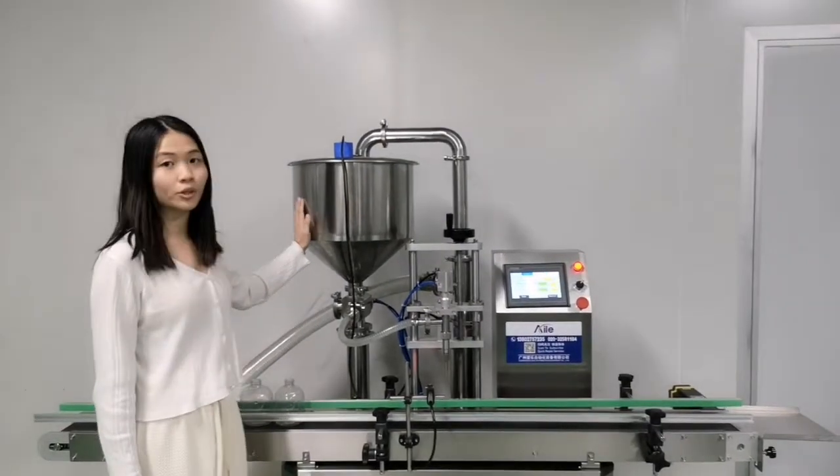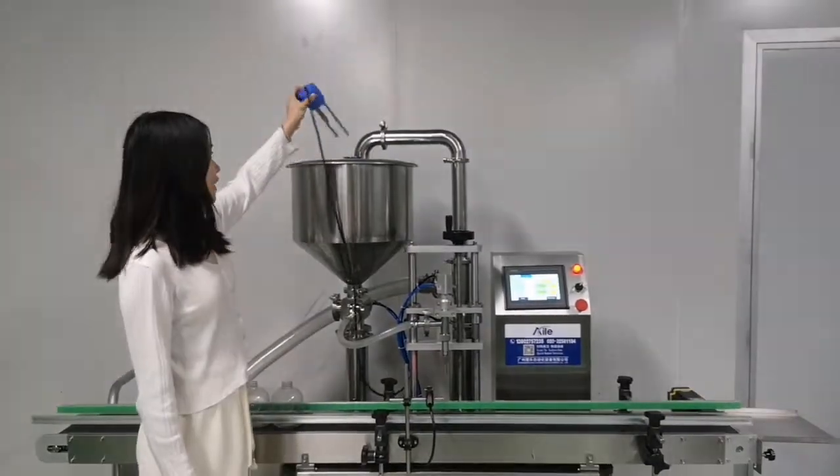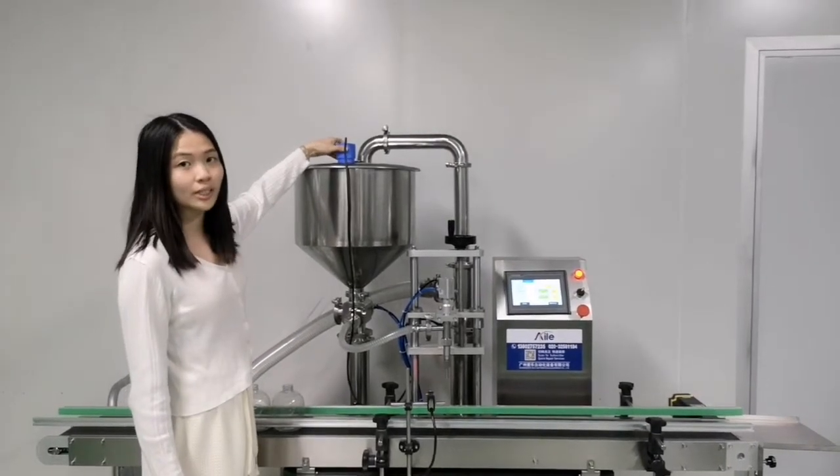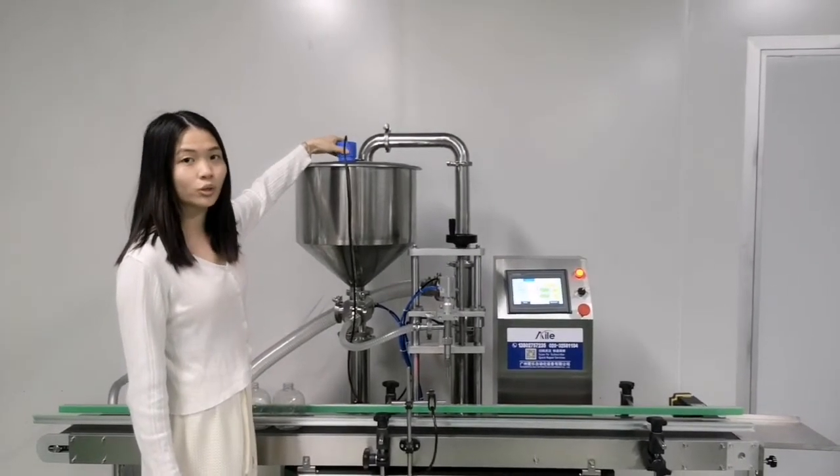Here we have the material hopper. It has a liquid level sensor. When the hopper is out of material, it will automatically feed the material into the hopper.